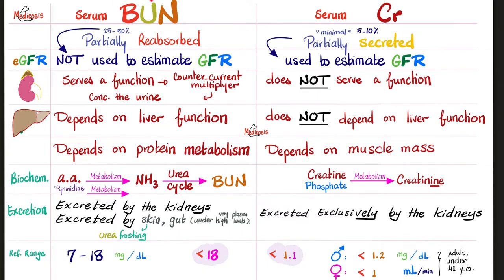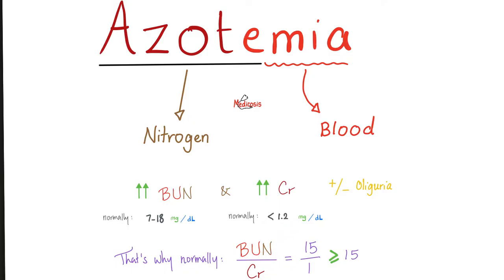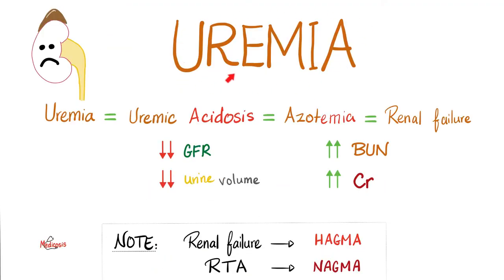BUN is partially reabsorbed because the kidney needs urea to concentrate the urine — some urea is reabsorbed from the tubule to the interstitium. But serum creatinine is total waste; we must excrete it. If BUN is 15 and creatinine is 1, the ratio is 15 or higher. A normal kidney reabsorbs urea but not creatinine, hence the ratio is above 1. In kidney failure, BUN and creatinine are high in the blood and low in the urine.